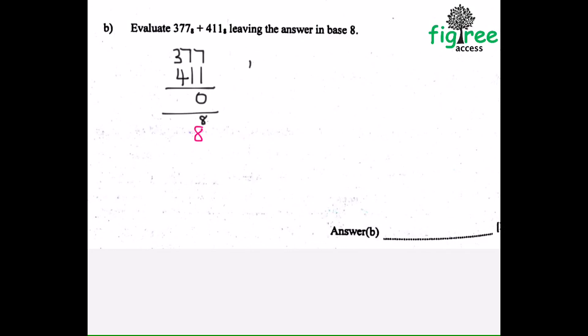The next step: we add the carried 1 to 7 plus 1. So this becomes 9. 9 divided by 8 is 1, remainder 1. Then we carry 1. Then 3 plus 4 is 7, plus the 1 we carried is 8. Then 8 divided by 8 is 1, remainder 0. We write 0 and carry 1. Since there is nothing left to add, we just put that 1. So the answer becomes 1, 0, 1, 0, base 8.